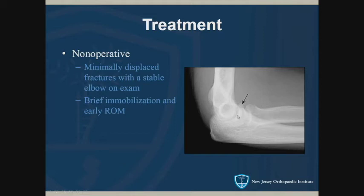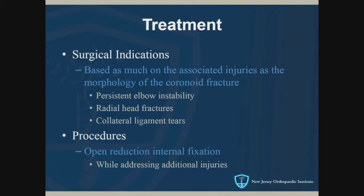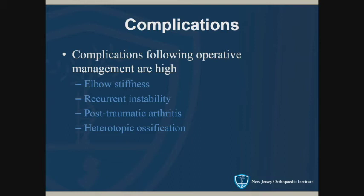If the elbow is stable and the fracture is minimally displaced, we treat these nonoperatively with brief immobilization and early motion. If the fracture is displaced or you suspect instability, refer them for assessment. Indications for surgery include persistent instability, associated fractures, or ligament injury. The procedure addresses those other injuries as well as fixing the coronoid — generally with a plate, plate and screws, or even suture depending on size and location. Similar complications apply: elbow stiffness, recurrent instability, post-traumatic arthritis, and heterotopic ossification.